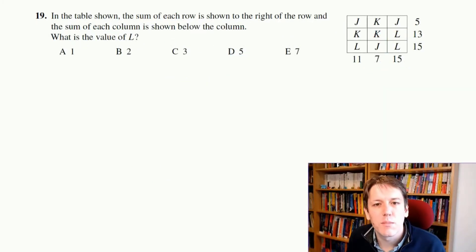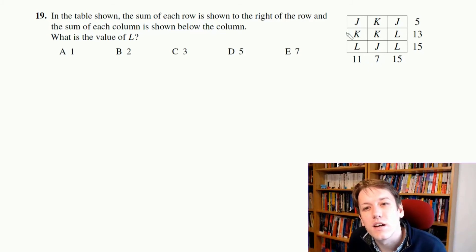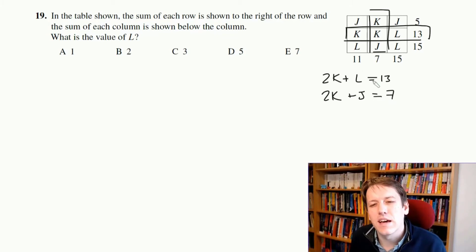It's in the table showing the sum of each row is equal to the right of the row, and the sum of each column is shown below the column. So that means like J plus K plus J is 5, K plus K plus J is 7. And there's different ways you can work out the answer here for sure. One thing I notice is that if I look at this row, that would mean that 2K plus L is 13. And if I look at this column, 2K plus J, right, is only 7. So actually that means that L must be 6 bigger than J.